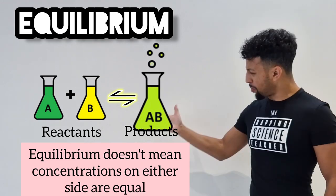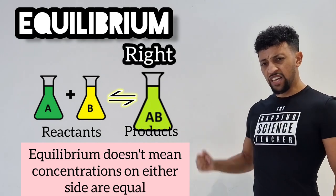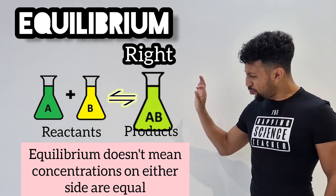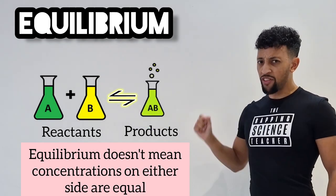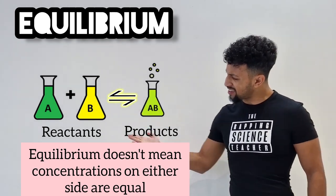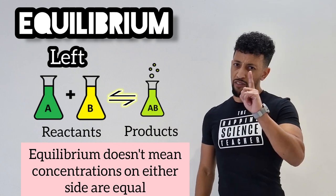If concentration of products is higher, then equilibrium lies to the right. If concentration of products is lower, then equilibrium lies to the left.